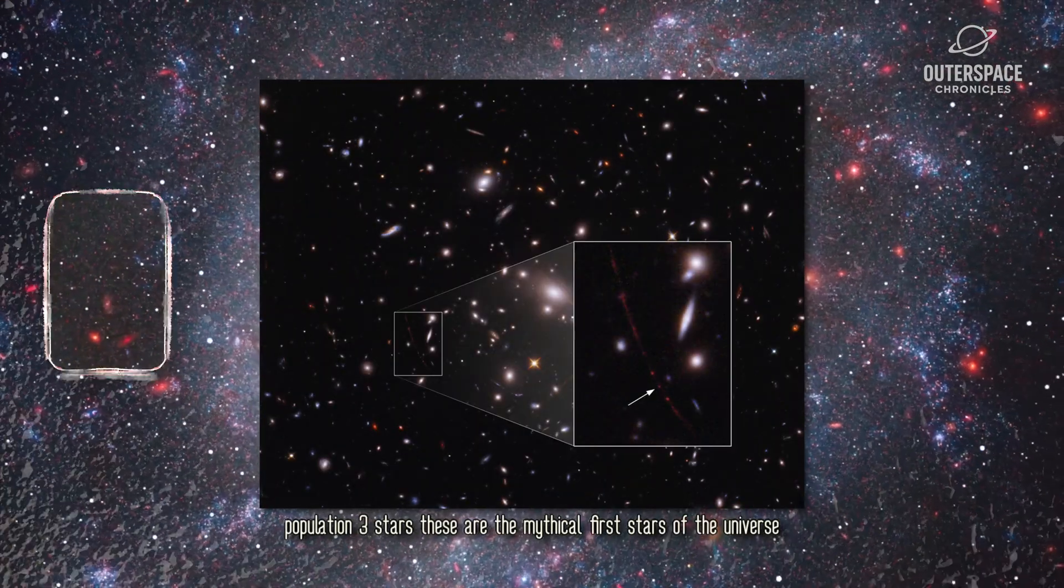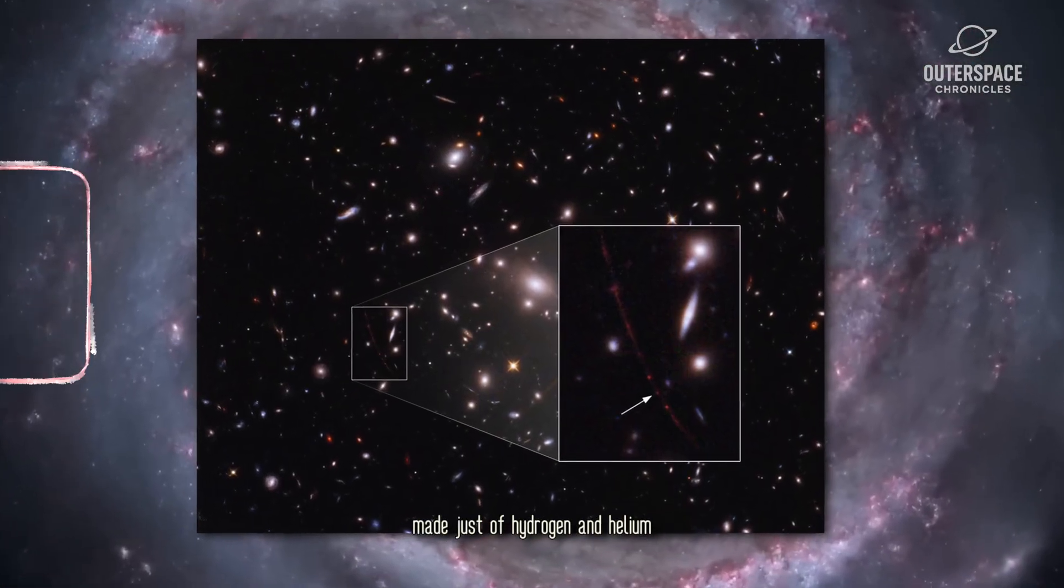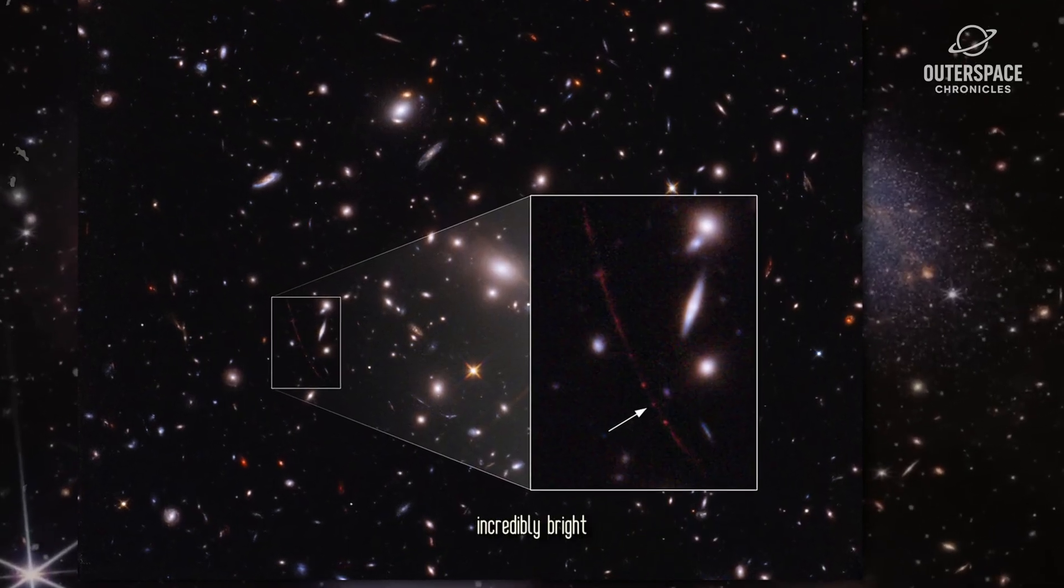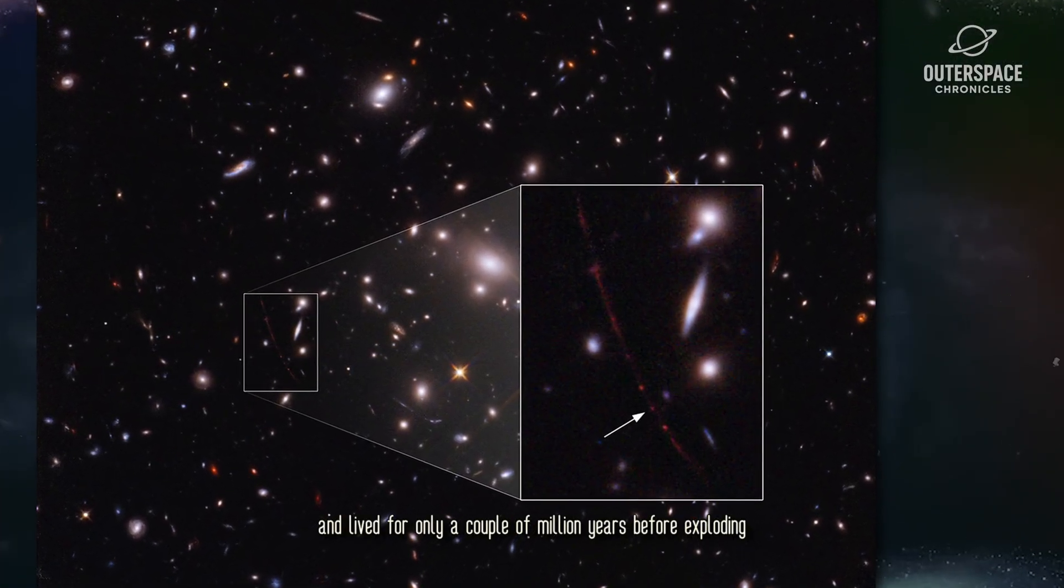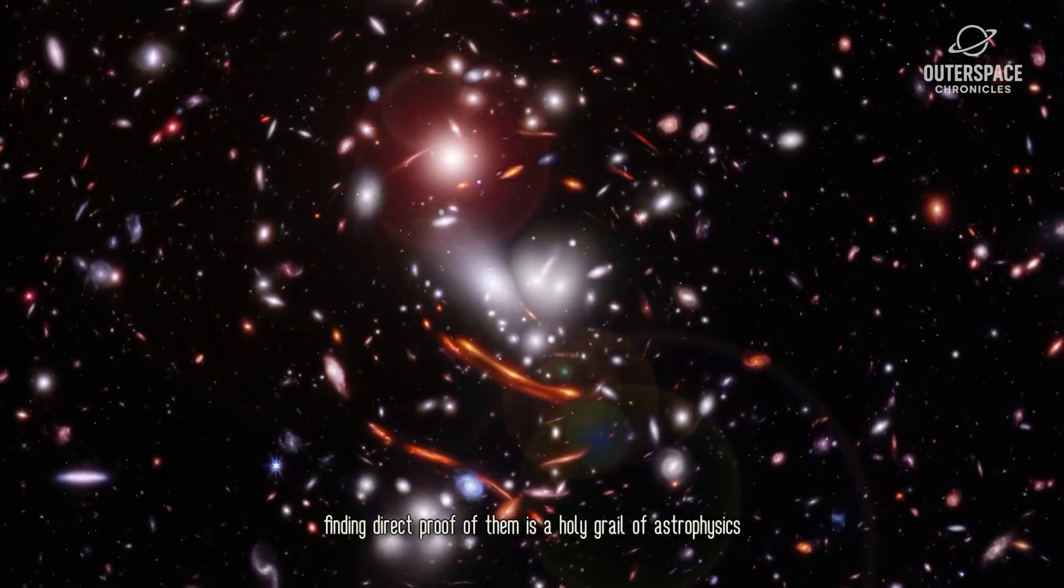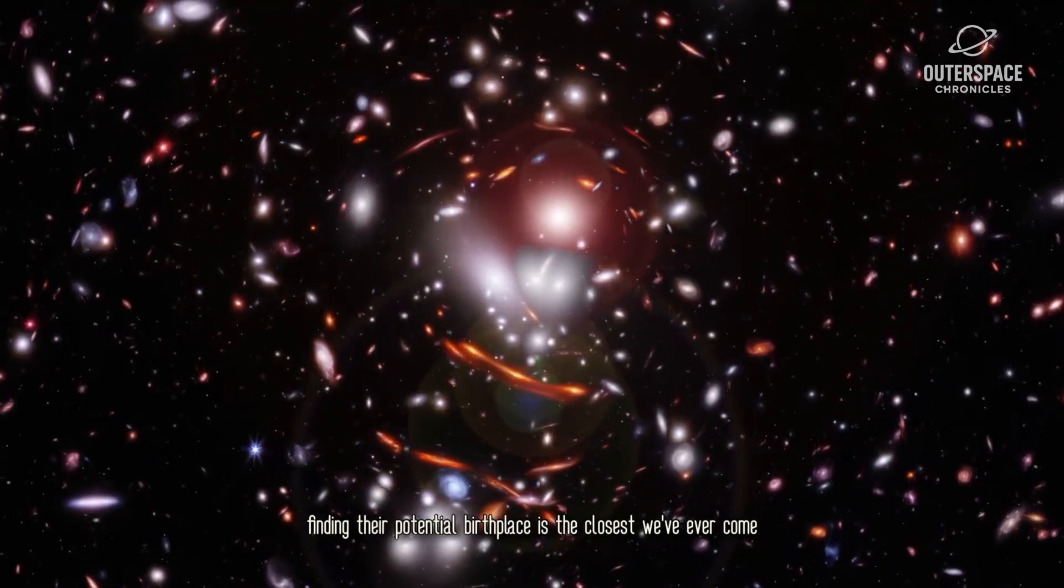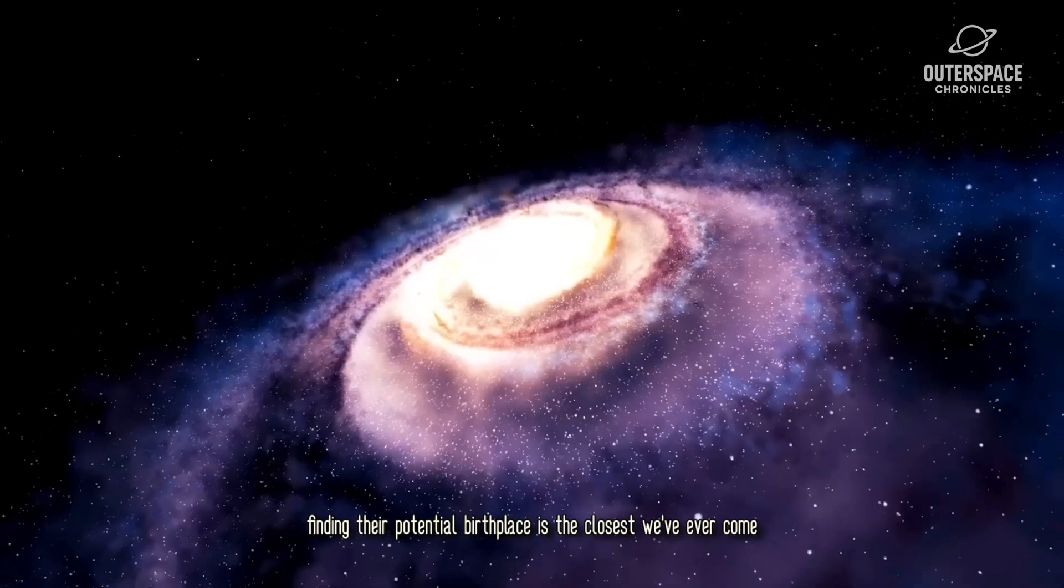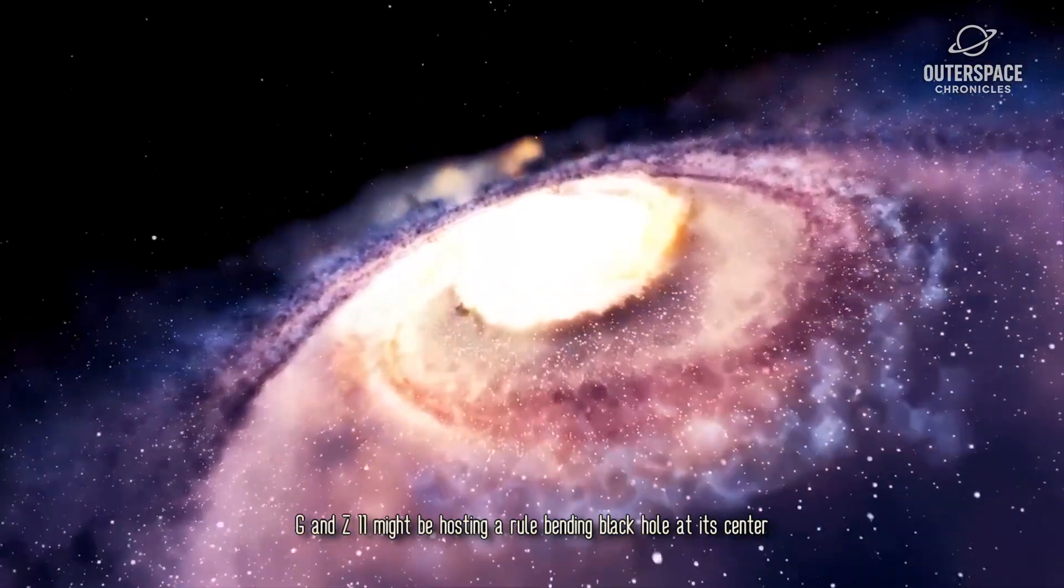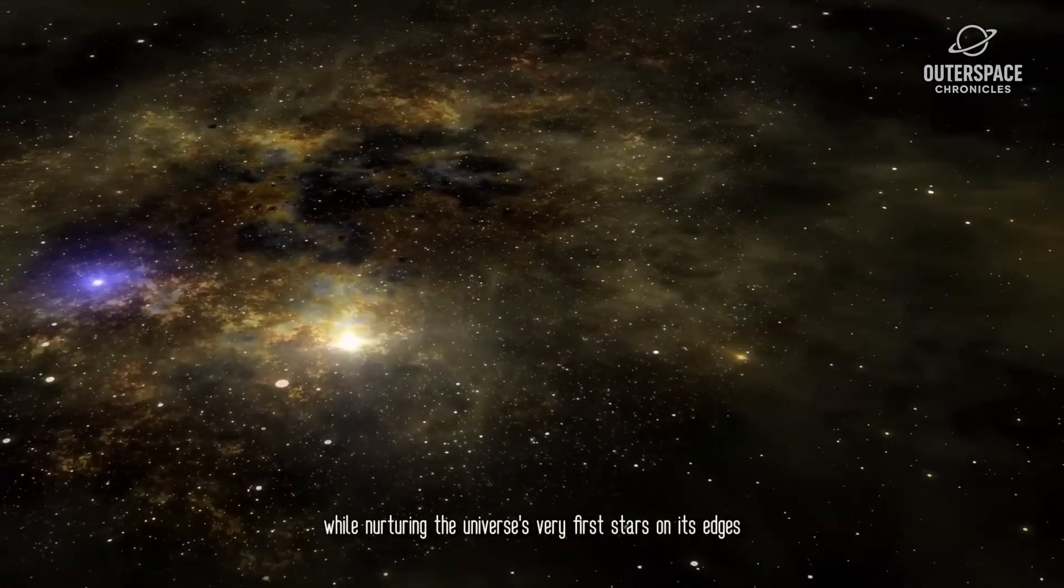Population 3 stars. These are the mythical first stars of the universe. Made just of hydrogen and helium, they would have been hundreds of times more massive than our sun, incredibly bright, and lived for only a couple of million years before exploding. Finding direct proof of them is a holy grail of astrophysics. While Webb hasn't seen the stars themselves, finding their potential birthplace is the closest we've ever come. It's another layer to the story. GNZ11 might be hosting a rule-bending black hole at its center, while nurturing the universe's very first stars on its edges.